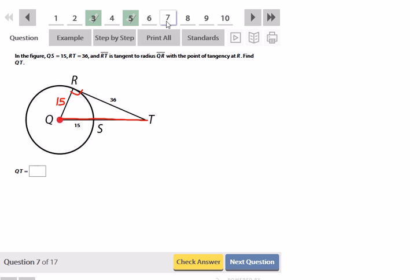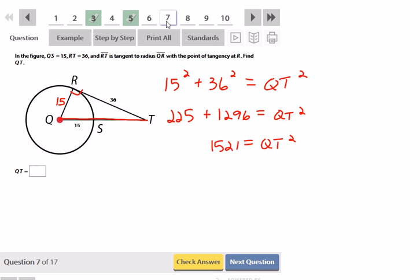So I would say 15 squared plus 36 squared is equal to QT squared. 15 squared is 225, 36 squared is 1296, and that's equal to QT squared. 225 plus 1296 is 1521. And then when I take the square root of both sides, the square root of 1521 is 39. So that's equal to QT.